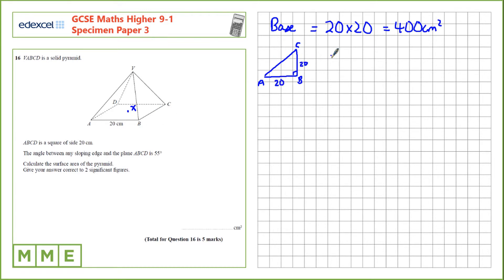We need to work out this length A to C so we can use Pythagoras. AC squared equals 20 squared plus 20 squared. So AC squared is 800. Now we take the square root of 800. AC is 20 root 2. We know that A to X is half of that. So A to X is 10 root 2.